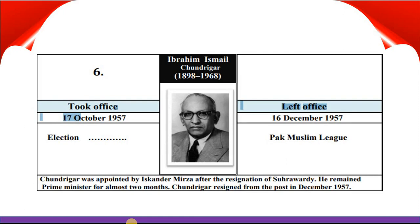Ibrahim Ismail Chundrigar took office 17th October 1957 and left office 16th December 1957. Chundrigar was appointed by Iskander Mirza after the resignation of Suhrawardy. He remained Prime Minister for almost two months and resigned from the post in December 1957.